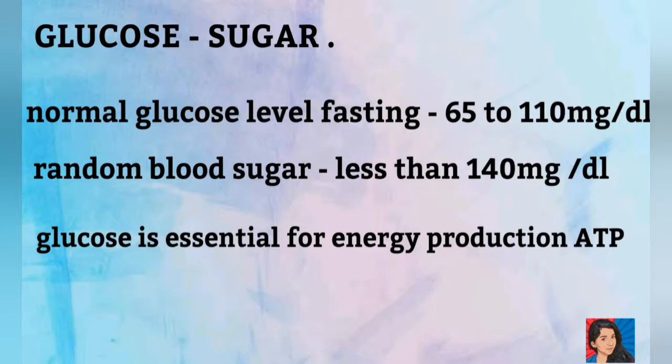The normal fasting glucose level is 65 to 110 mg per deciliter. The random blood sugar level is 140 mg per deciliter. When levels are above 110 fasting or above 140 random, that is diabetes.